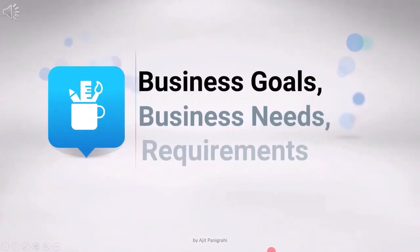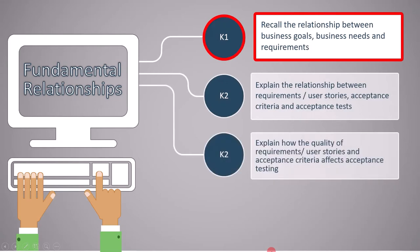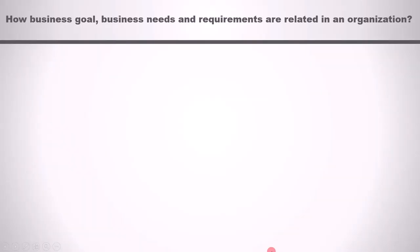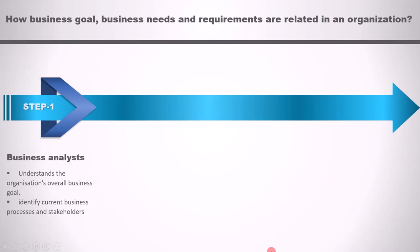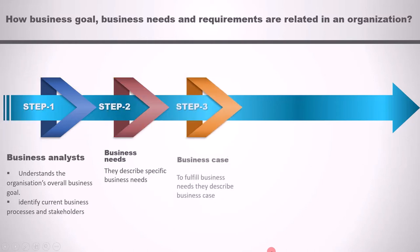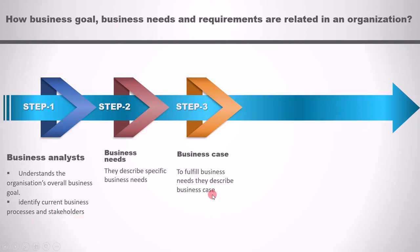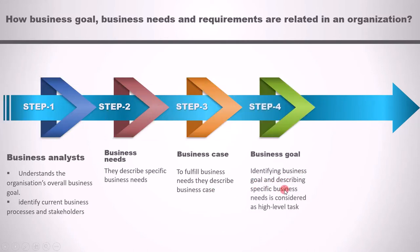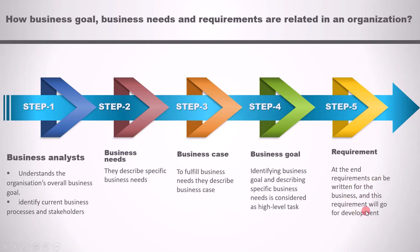In this lecture we will cover business goals, business needs, and requirements. The learning objective — marked K1, meaning we must remember it — is to recall the relationship between these three concepts. Business analysts first understand the organization's overall business goal, identify current business processes and stakeholders, then describe specific business needs. To fulfill these needs they describe a business case. Finally, requirements are written and sent for development. The same word 'requirement' refers to both business requirements and product requirements.